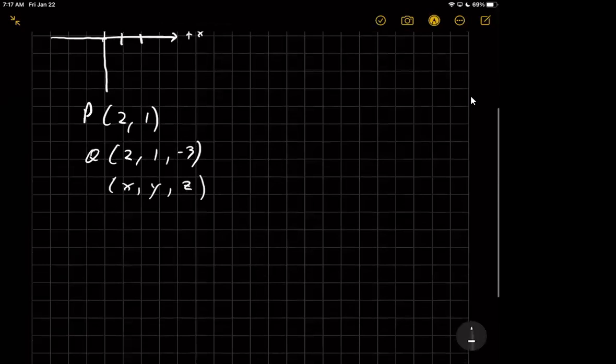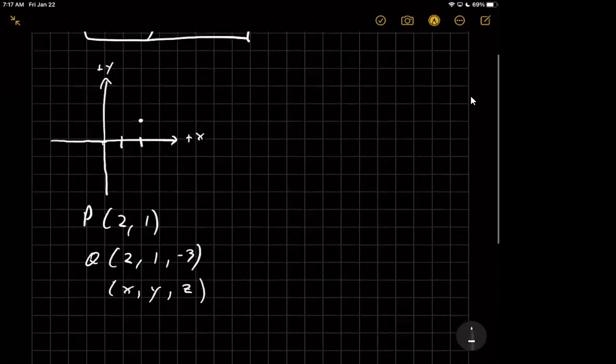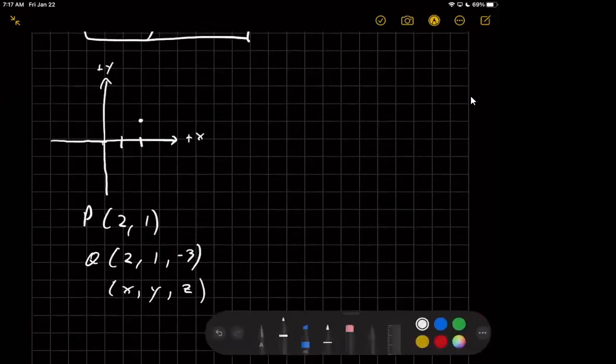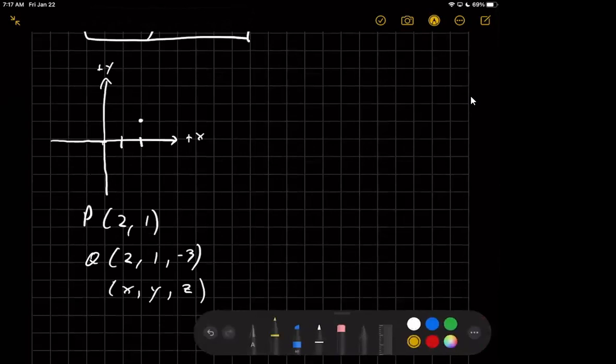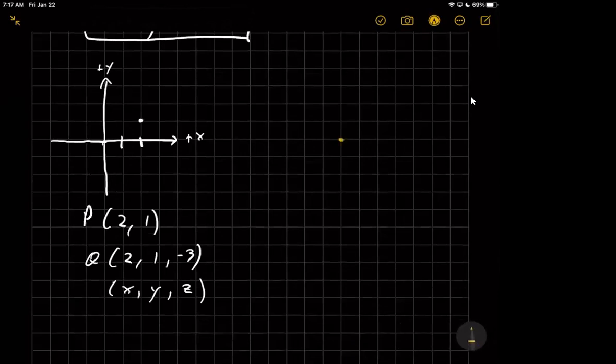But to draw this, we need to do things a different way. So let me come over here and draw a three-dimensional axis. What I'm going to do is I'm going to draw my x-axis this way, and my y-axis this way, and a rotation of the x into the y-axis using a right hand would give us a z-axis going this way.